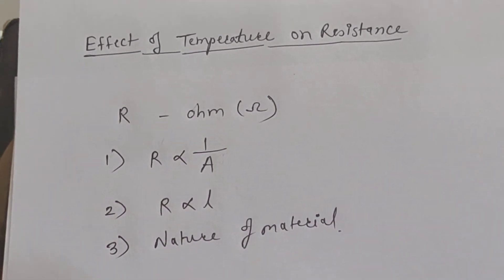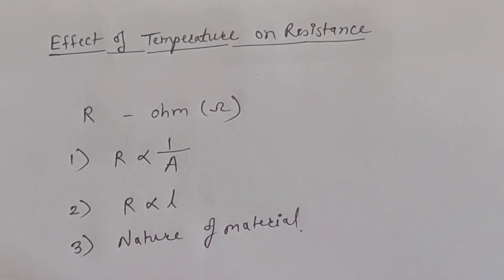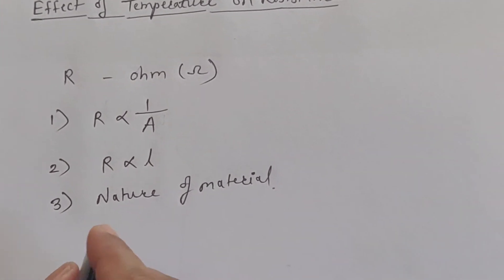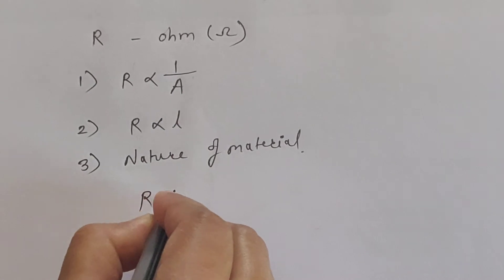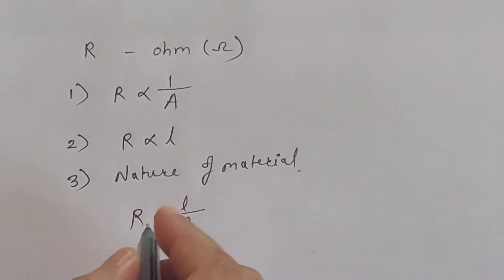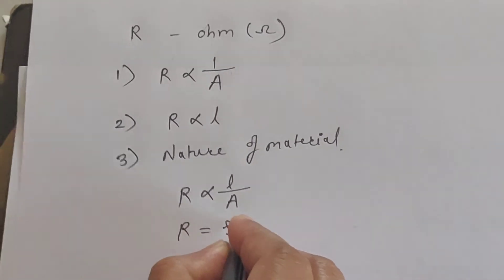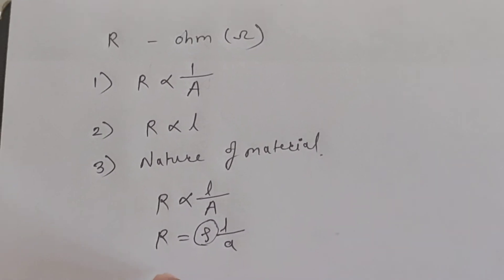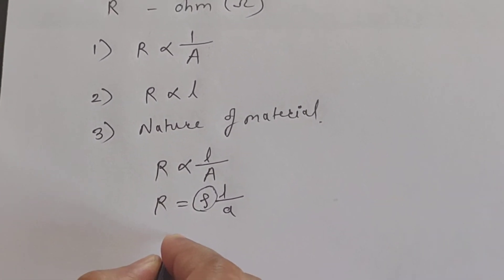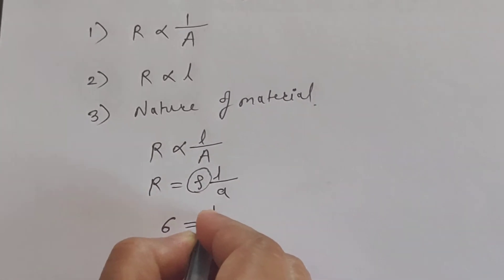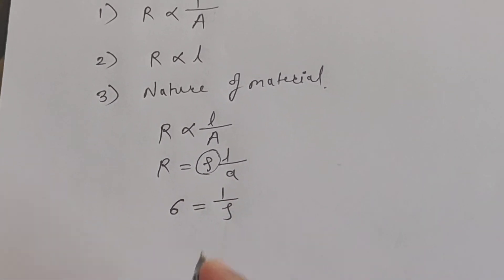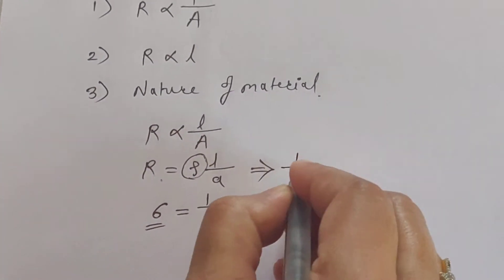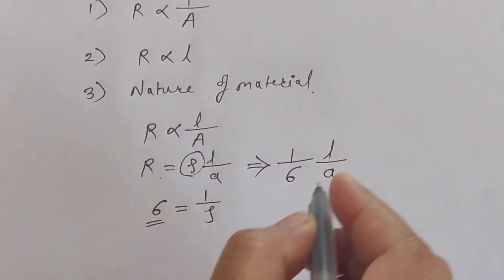The third factor is the nature of the conducting material. Resistance depends on conductivity. Conductivity is the reciprocal of resistivity. We know R is proportional to L/A, so removing the proportionality sign gives R = ρL/A, where ρ is resistivity. The reciprocal of resistivity is conductivity, denoted by σ = 1/ρ. So resistance can be written as R = (1/σ)(L/A).